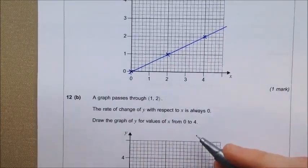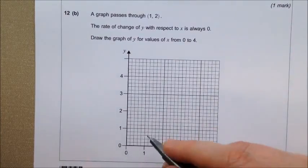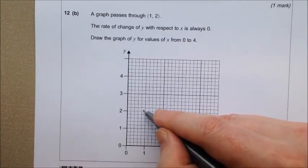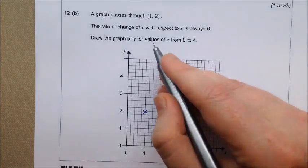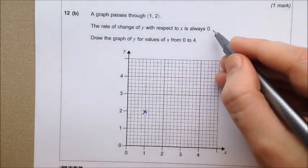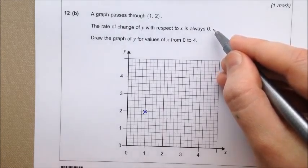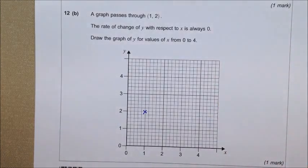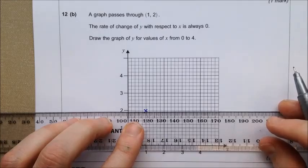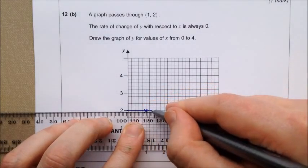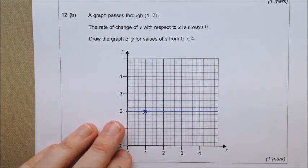The graph passes through 1, 2 on this next bit. 1, 2. The rate of change of y with respect to x is always 0. So that's a gradient of 0. A gradient of 0 means that it's flat. So it's going to be that line there.